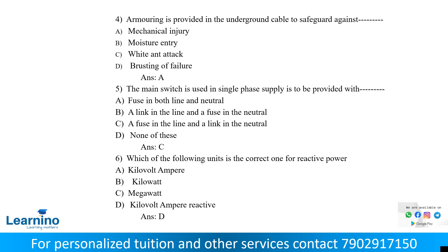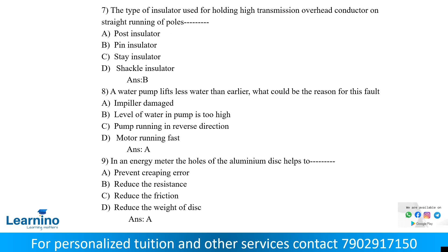Question number six: which of the following units is the correct one for reactive power? The types of power are active power, reactive power, and apparent power. Active power unit is kilowatt (kW), reactive power unit is kilovolt ampere reactive (kVAR), and apparent power is volt ampere (VA). The answer is D.